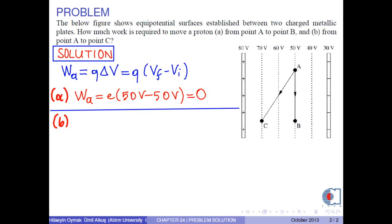In part B, the proton is initially at point A, where the potential is 50 volts. Finally, the proton is at point C, where the potential is 70 volts. We write these values into the formula of Q times delta V.